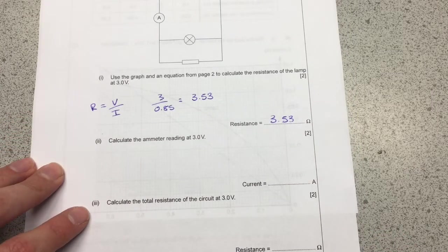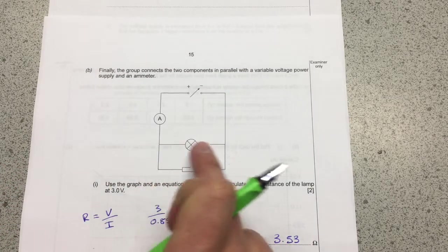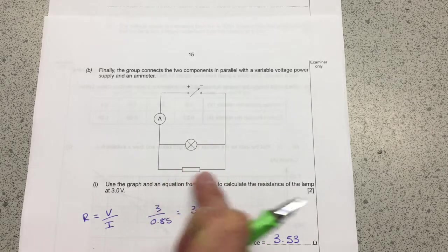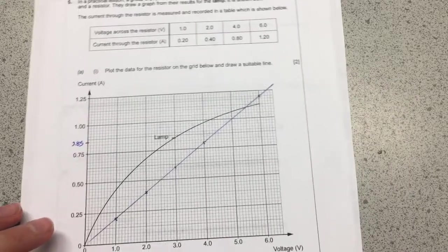Next calculate the ammeter reading. Now this one's a little bit tricky because the ammeter is going to have the current through the lamp and the current through the resistor. So there's a couple of ways that you can do this. If we flip over, I'll show you the simplest.